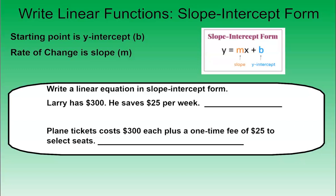This video is going to cover writing linear functions in slope-intercept form when you're given a mini-word problem. So a little bit about slope-intercept form. Slope-intercept form is in the form of y equals mx plus b, where m is the slope and b is the y-intercept.